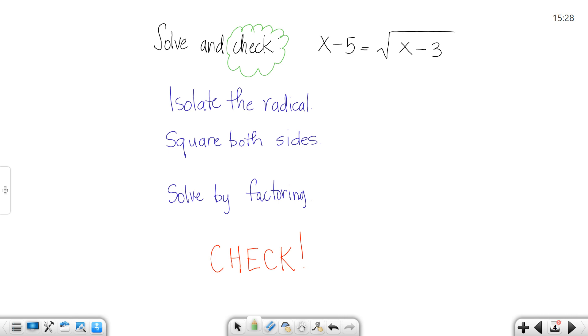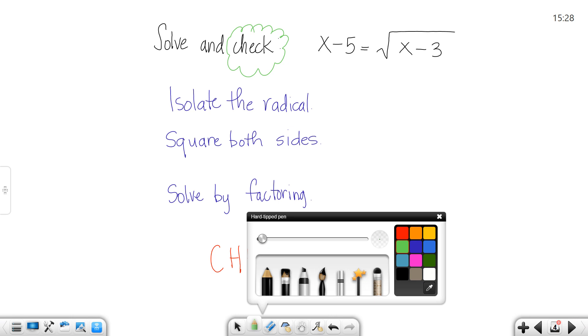You see your steps on the left. What you want to do is isolate the radical and get it by itself. So in this particular problem, the radical is already by itself. Great.